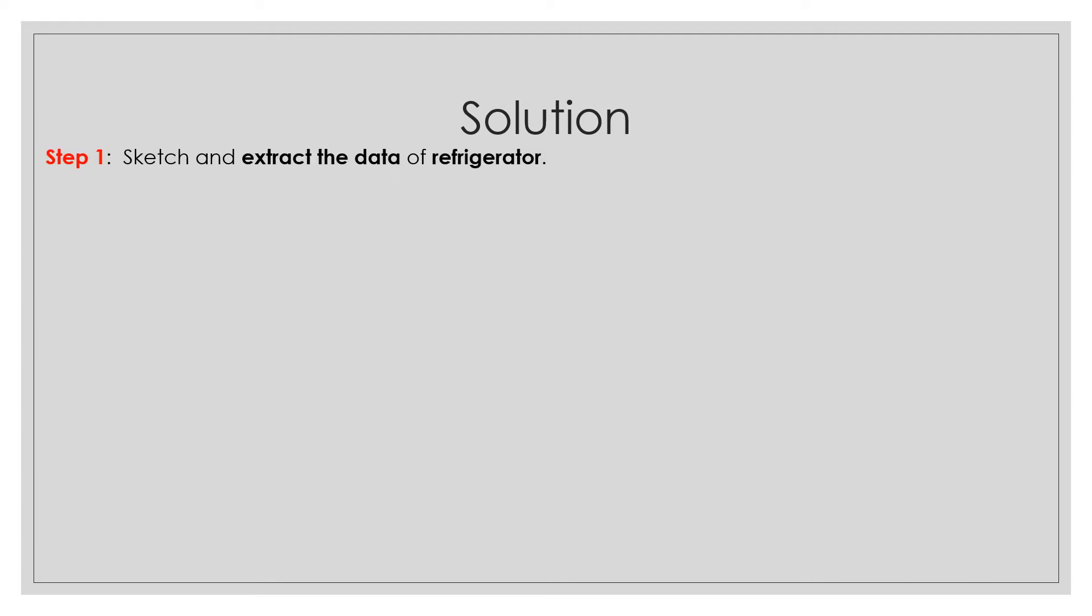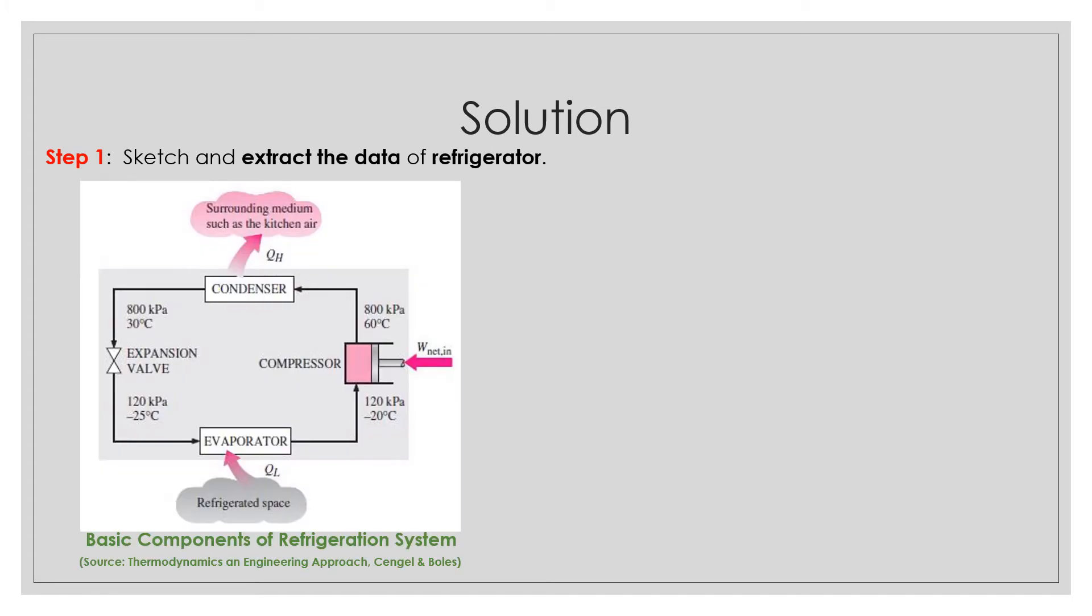Step one, sketch and extract the data of refrigerator. This is the basic component of the refrigeration system which consists of compressor to increase the pressure, condenser to remove the heat, expansion valve as a pressure dropper or reduce the pressure as well as reduce the temperature, and evaporator to receive the heat.